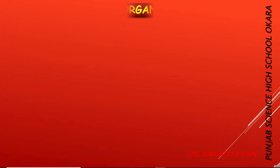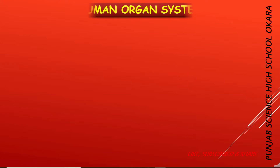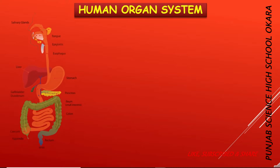Now, we learn about the human organ system. The human organ system consists of two major systems.